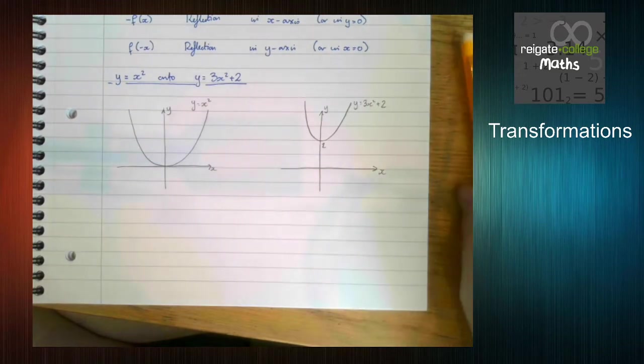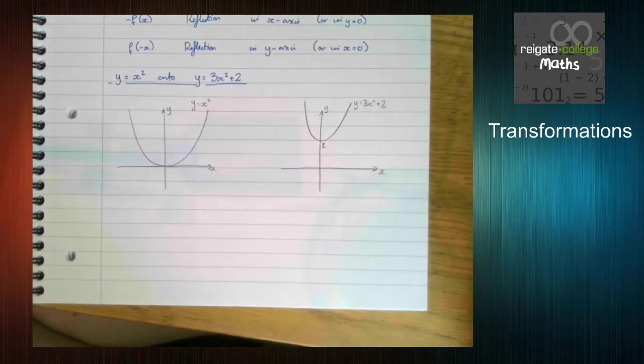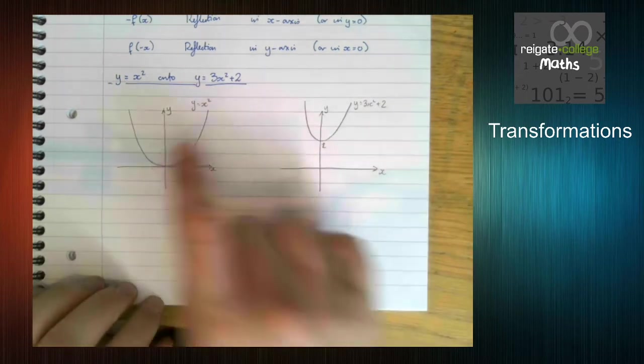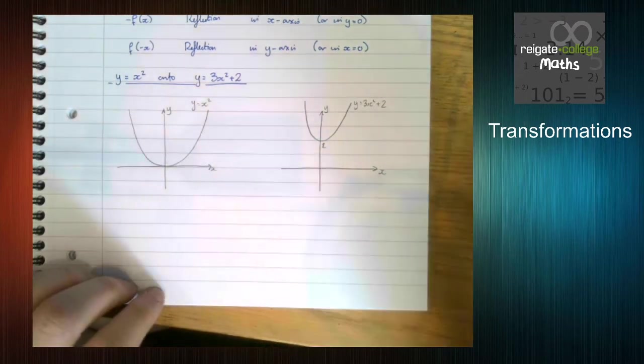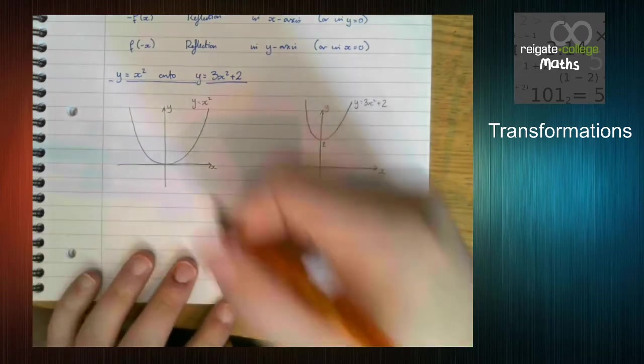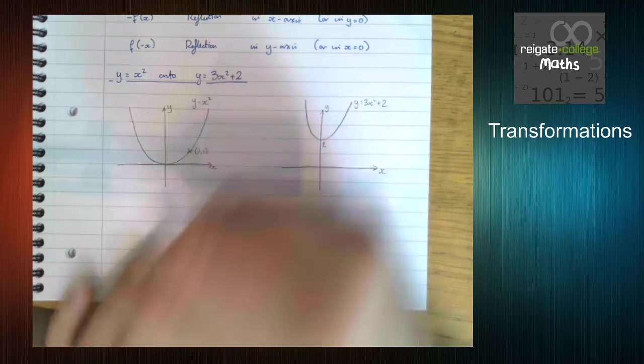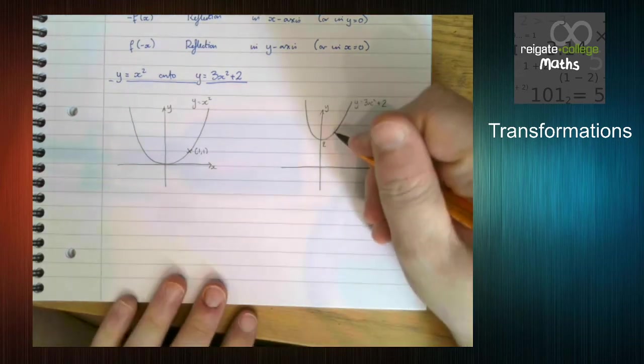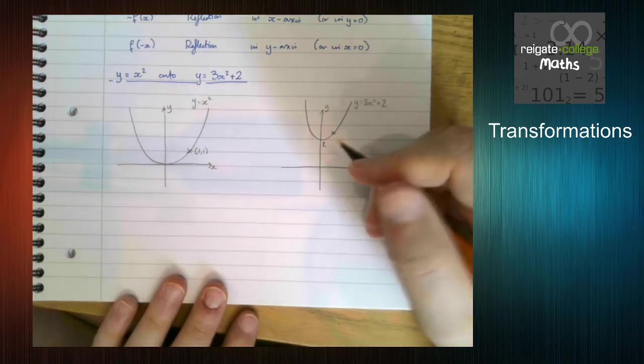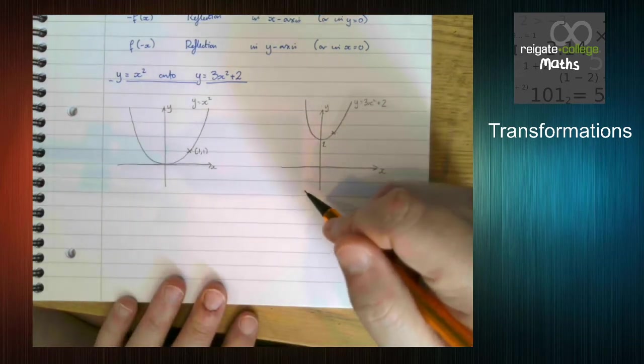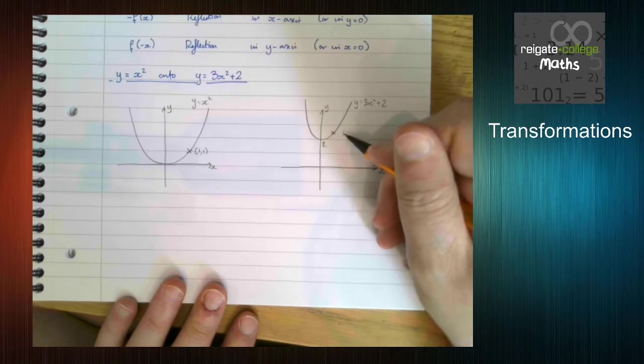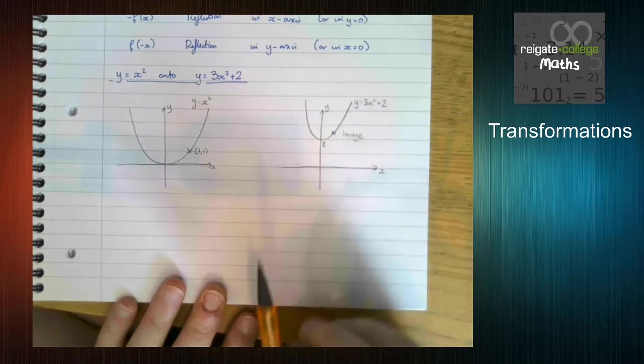So significantly steeper, and moved up. But how do we get from here to here? Let's look at a single point. Let's look at the point 1, 1. So that's going to map to a point here, vaguely, and we call this the image of the point under the transformation.